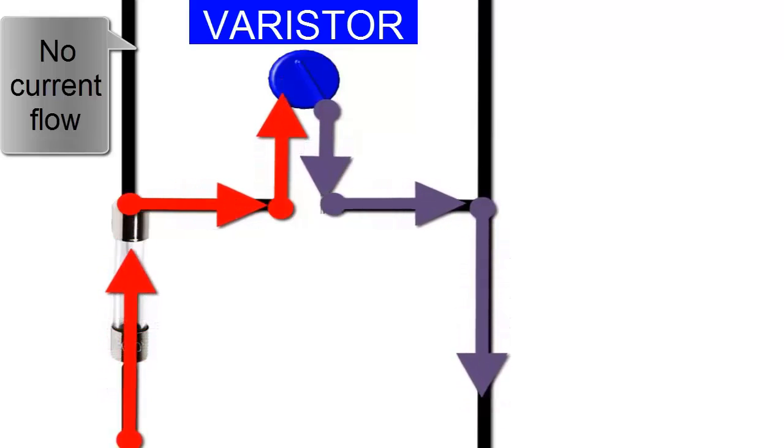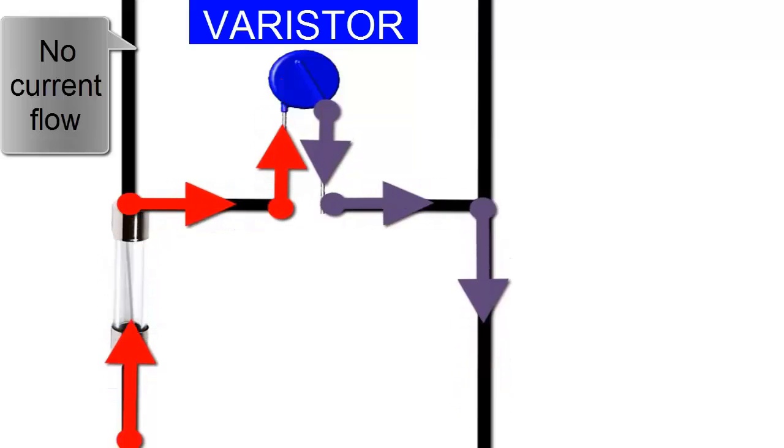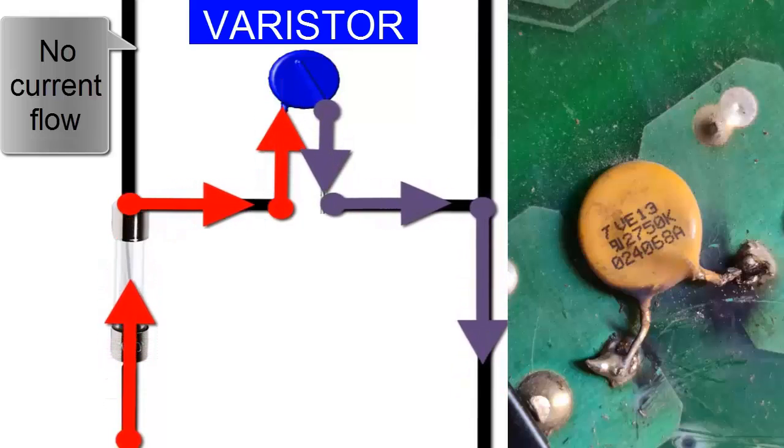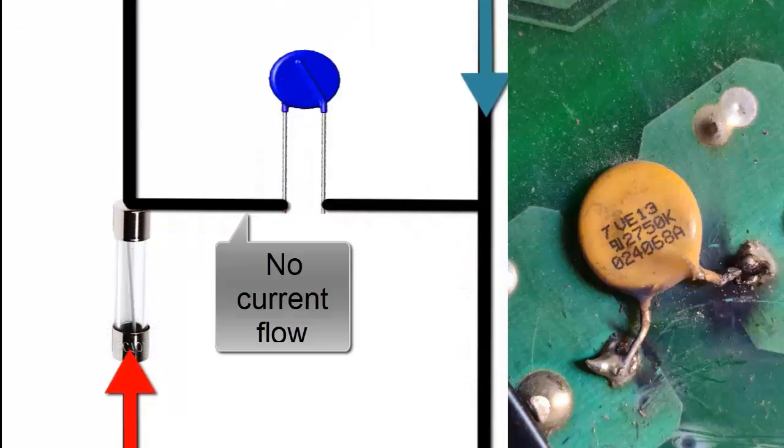It's important to note that the varistor only suppresses transient spikes. If exposed to a constant high voltage, it degrades or becomes damaged, as when 230 volts are applied to a varistor designed for 110 volts.